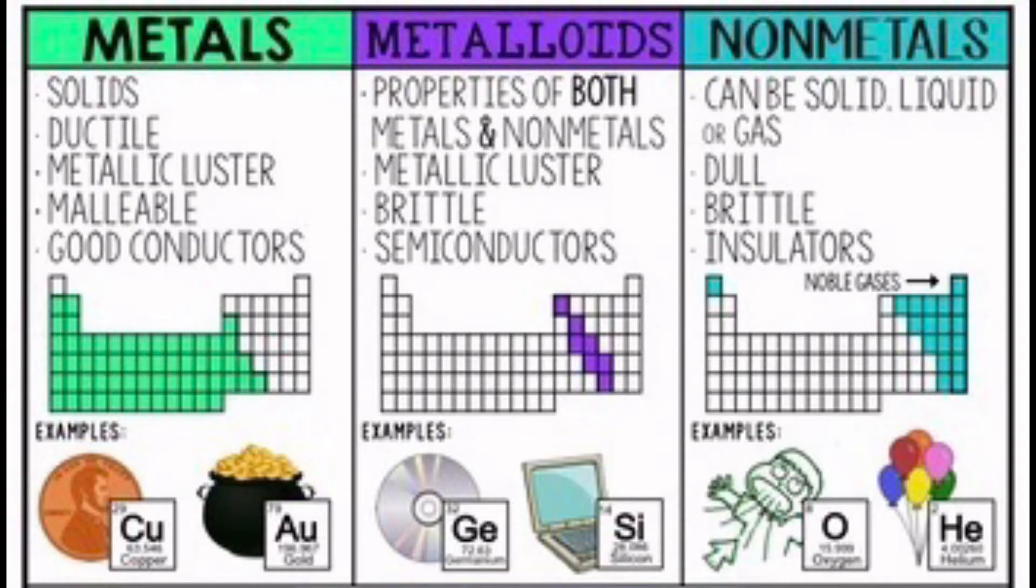Metals are typically found at the left side of the periodic table. They are often conductive to electricity, malleable, shiny, and sometimes magnetic. While non-metals are found at the right side of the periodic table, they are typically not conductive, not malleable, dull, and not magnetic.